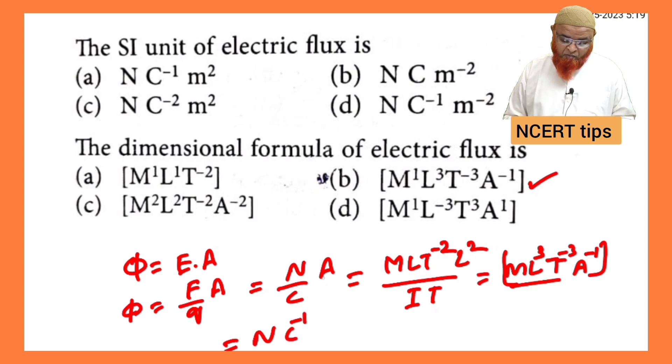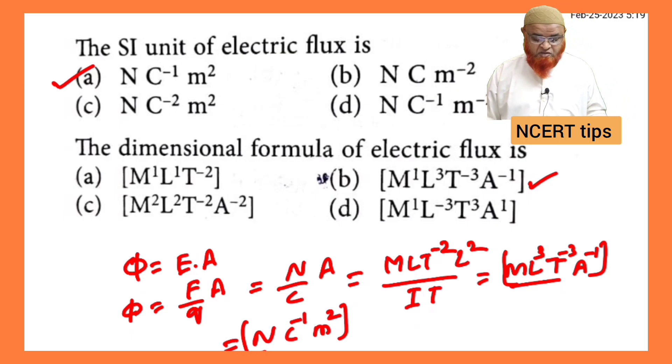Newton per Coulomb, Coulomb inverse, area means meter square. So I think the first option is correct. The correct option is the first option.